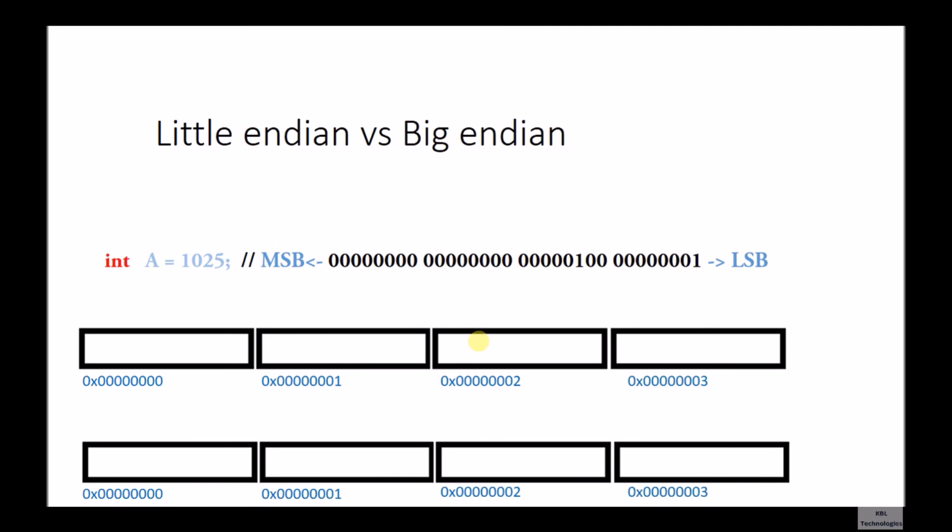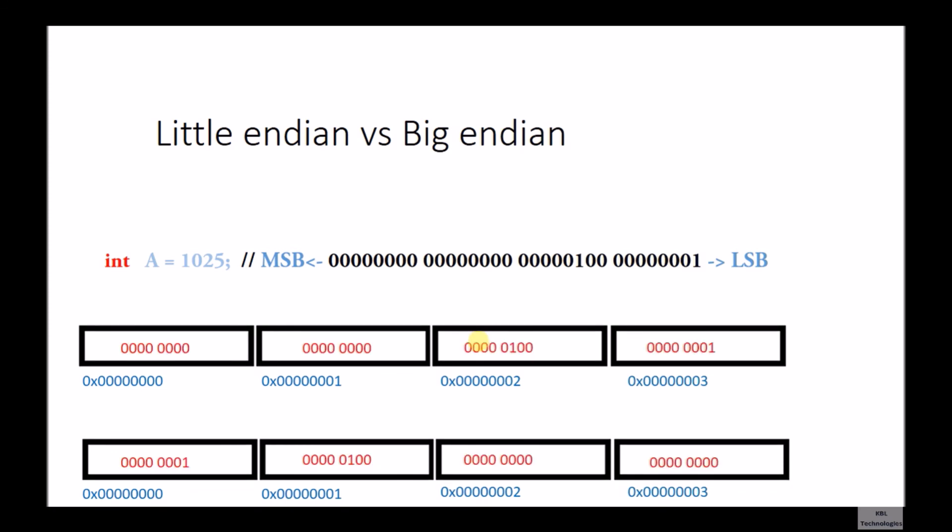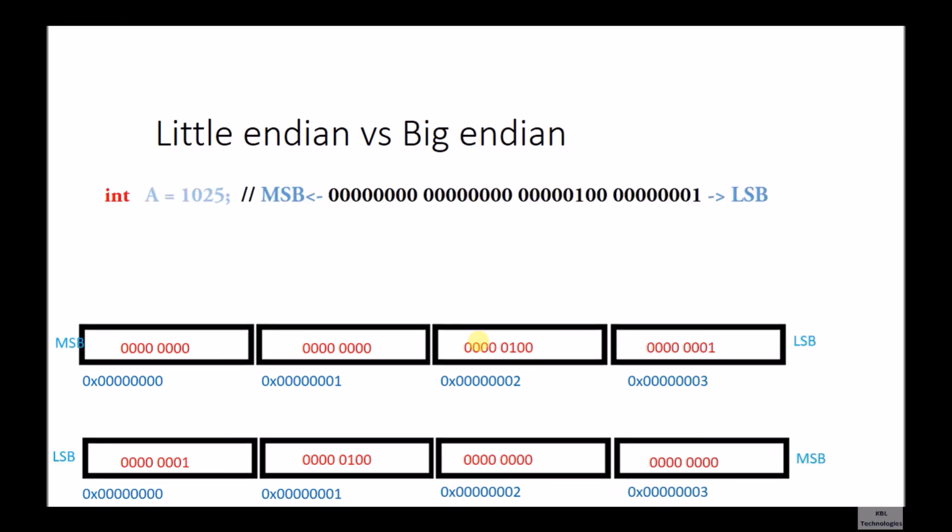Now I have a question for you. I have taken the same integer 1025 and I have two figures — you will have to tell me which one is Little Endian and which one is Big Endian. Tell me: which one is Big Endian, the upper one or the lower one, and which one is Little Endian? The upper one is Big Endian — yes, thank you for answering!